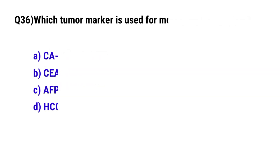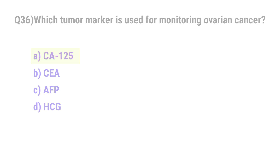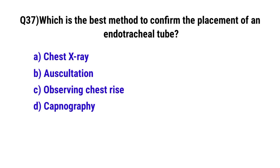Question number 36: Which tumor marker is used for monitoring ovarian cancer? The correct option is A: CA-125. Question number 37: Which is the best method to confirm placement of an endotracheal tube? The correct option is D: Capnography.